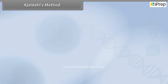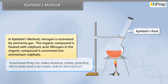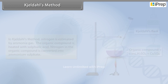In Kjeldahl's method, nitrogen is estimated by ammonia gas. The organic compound is heated with sulfuric acid, and the nitrogen in the organic compound is converted into ammonium sulfate.